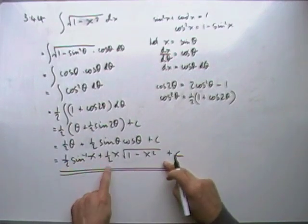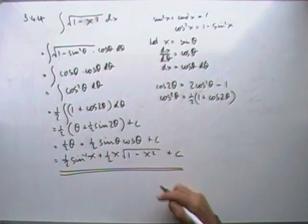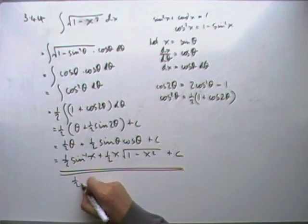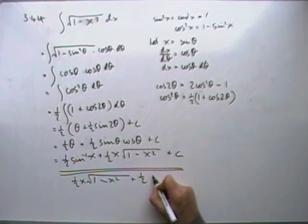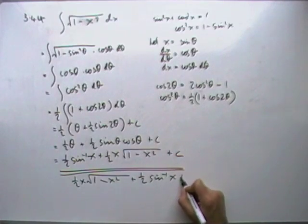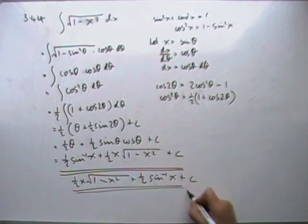Although usually you see that written with that square root first, because that's the way it appears there. So if you wish, you could see you've got a half of x times the square root of 1 - x², plus a half inverse sine of x, and then plus the C if you wanted.